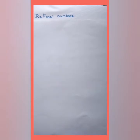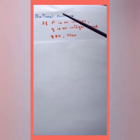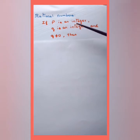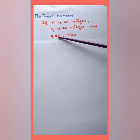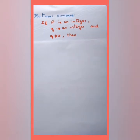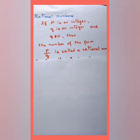Next we move to rational numbers. If p is an integer and q is also an integer, and q is not equal to 0, then a number of the form p/q is called a rational number.